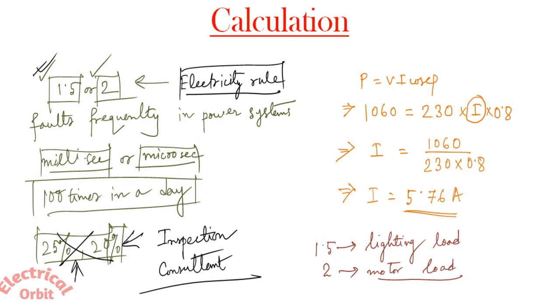So you have to multiply it 1.5 for lighting load and 2 for motor load. Now the story has not ended here. So after multiplying it with 1.5 we get 8.64 amperes. Now this ampere rating MCB is not available in the market.